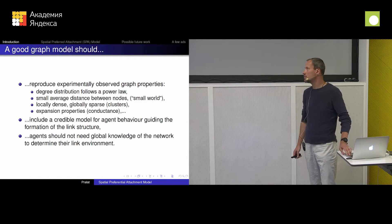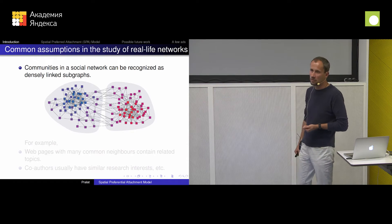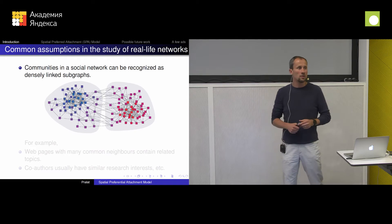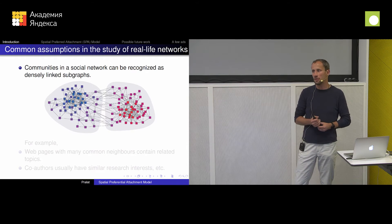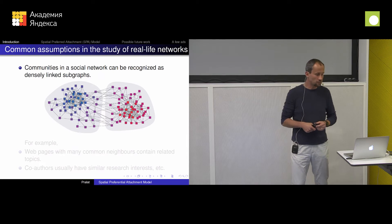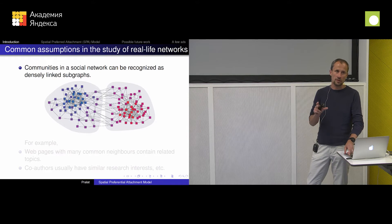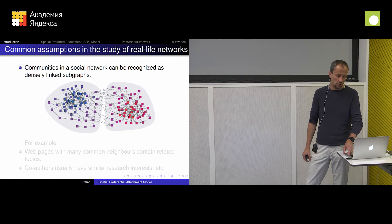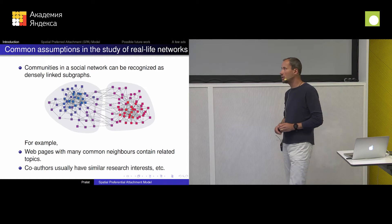We should have some model that only has very limited local information about the network. Those are a few things that I think a good model should have. And what I would like to see as an outcome of this model: I want to see communities kind of naturally emerging from the model. Because I want to understand why these communities occur and how we can detect them.